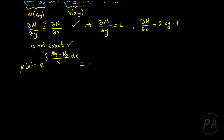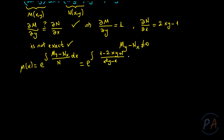Since the given differential equation is not exact, we are sure that ∂M/∂y - ∂N/∂x is different from zero. Let me write: exp(∫(1 - 2xy + 1) / (x²y - x) dx).